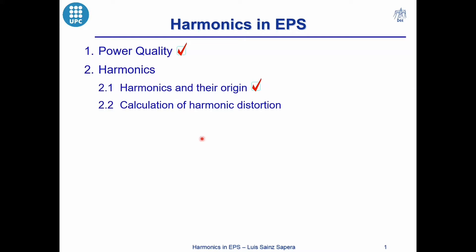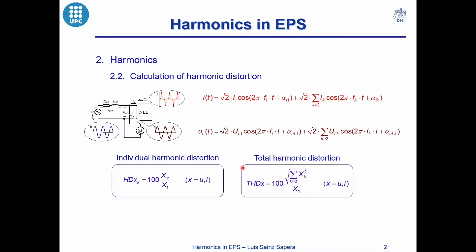For this we have two ratios: the individual harmonic distortion and the total harmonic distortion. Imagine that we have a current and a voltage distorted with the fundamental waveform and the harmonics. The individual harmonic distortion is determined for each harmonic, and it is the ratio between the corresponding root mean square value of the harmonic and the root mean square value of the fundamental waveform. This ratio provides an insight about the weight of harmonics on the waveform distortion.